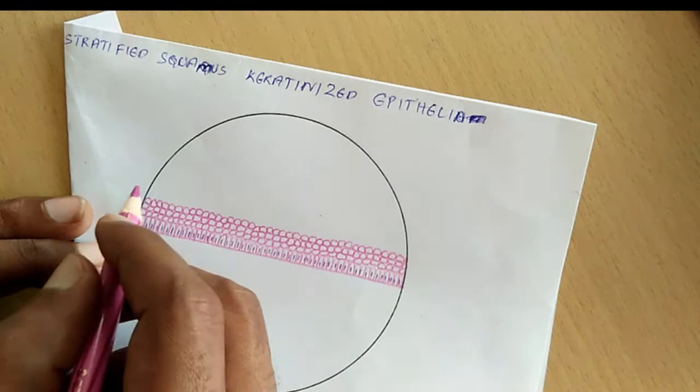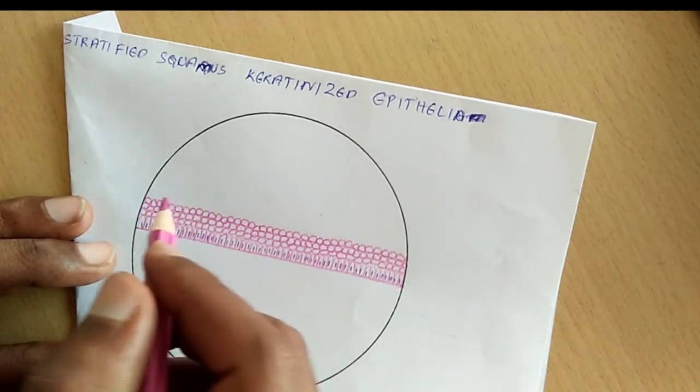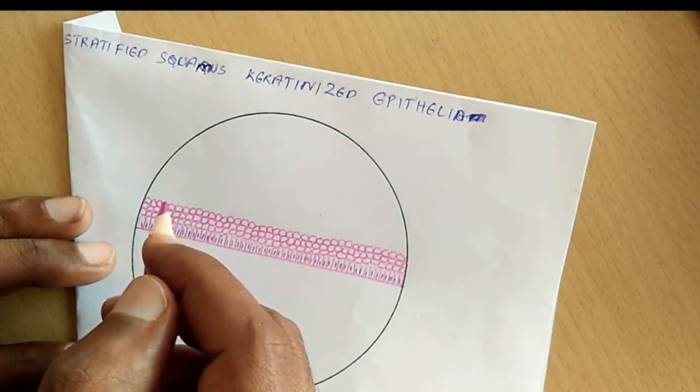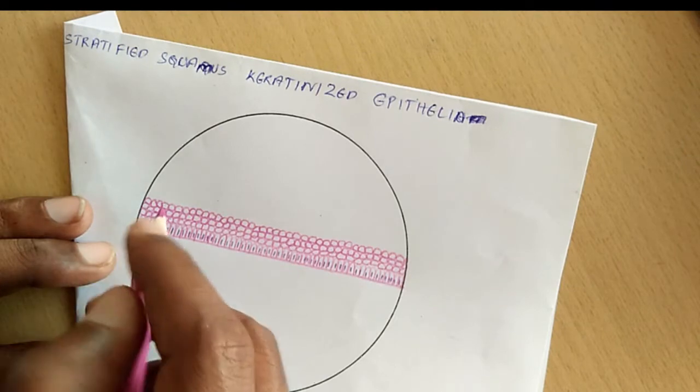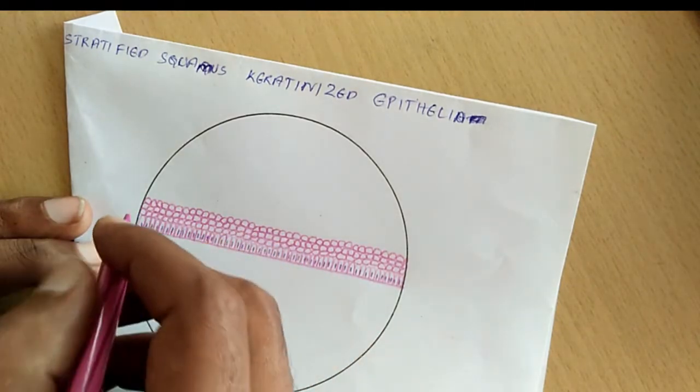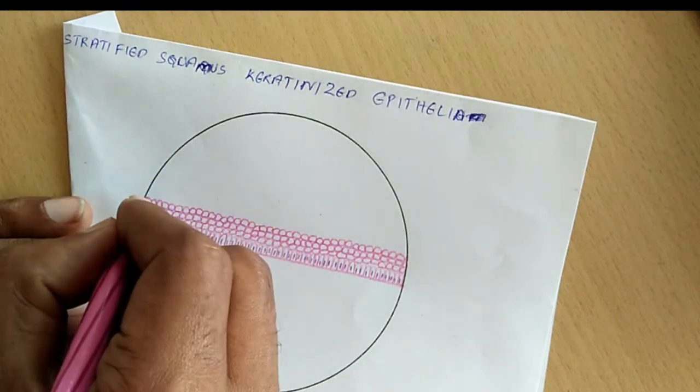Now coming to the next layer, so you can draw two to three layers or more than that, or four layers you can draw. The next layer is stratum granulosum. Here the cell shape changes from polyhedral to round. So that is what we are going to represent, change in shape of the cell.